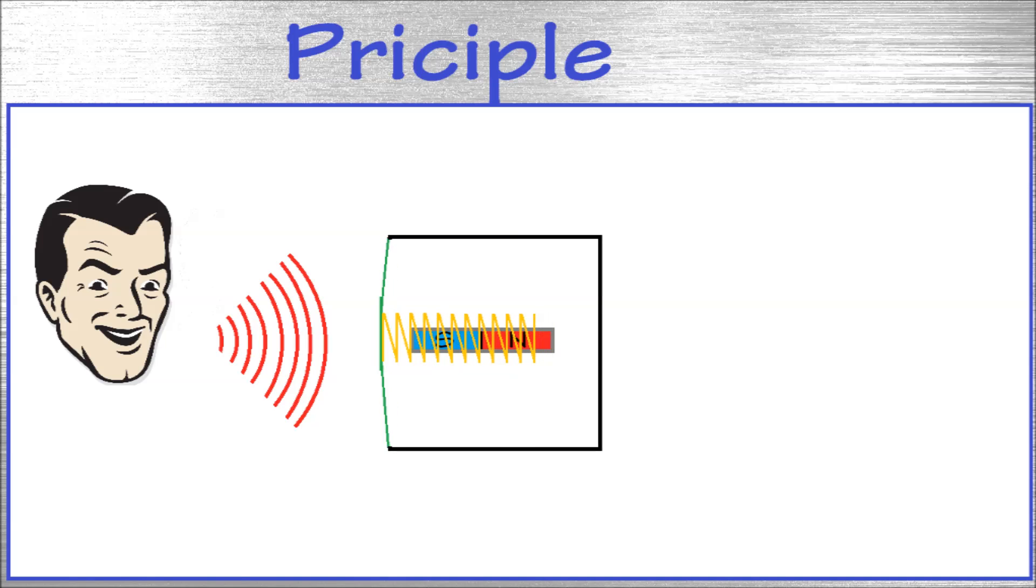What happens now is the coil begins to move over the magnet at the frequency of the incoming sound waves. Because the coil experiences a changing magnetic field, a voltage is induced in the coil.